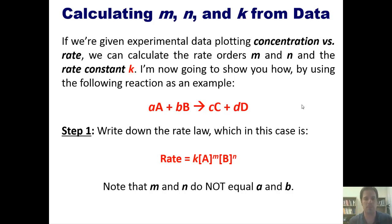We have no idea what M and N are yet, but we should note that M and N do not equal A or B, respectively. I mean, they might end up equaling A or B, but if they do, it's just completely coincidental, because M and N can only be determined experimentally and not by just looking at the balanced chemical equation.